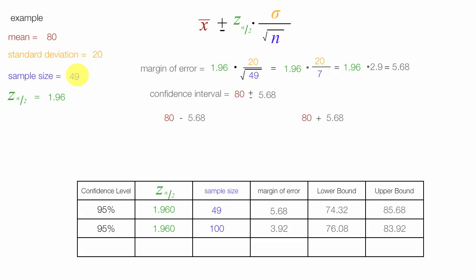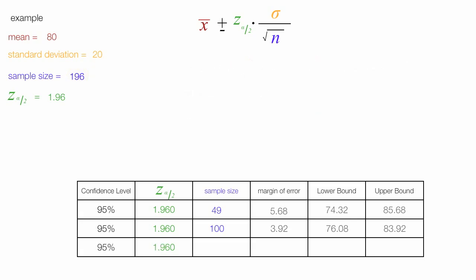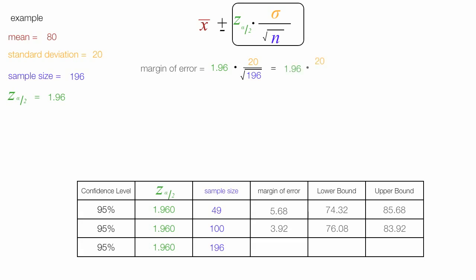Now I'm going to increase the sample size to 196 and calculate these values. The margin of error is equal to 1.96 times 20 — the standard deviation — divided by the square root of 196, which is 14. This equals 1.96 times 1.4, which equals 2.80.